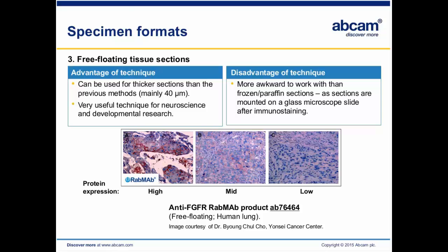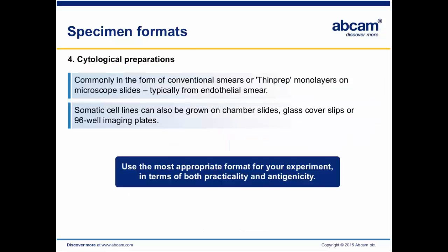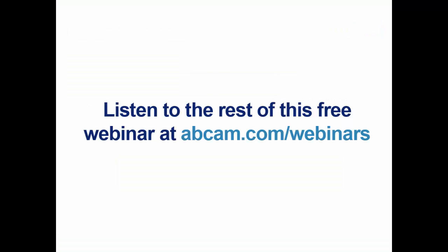Each of these formats has their advantages and disadvantages depending on what works best for you. Cytological preparations are commonly in the form of conventional smears — sometimes referred to as thin-prep monolayers on a microscope slide. You can think of this as taking an endothelial smear, like a cheek swab, and putting it on a slide. Cytological preparations also include cell lines grown on chamber slides, glass coverslips, or 96-well imaging plates. Use the most appropriate format for your experiment in terms of both practicality and antigenicity.